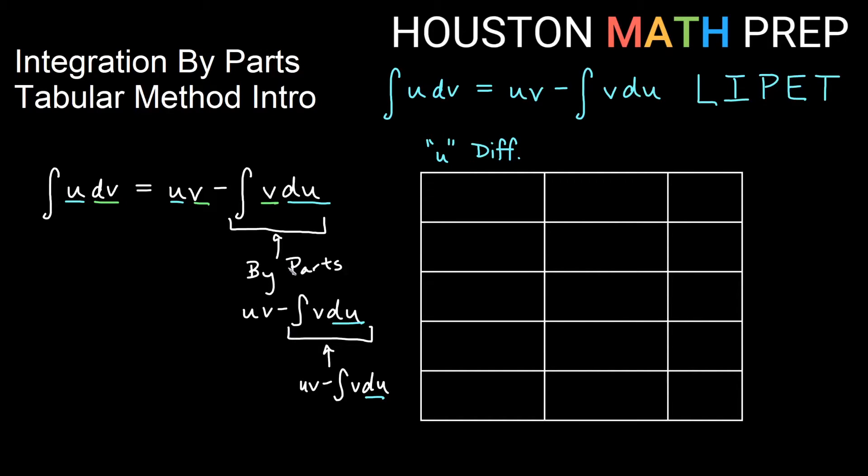And then if I were going to choose that same thing or a similar thing to be dv again when I integrate by parts, then I would take the antiderivative of it again, and then again, etc. So we will also have a column that is based on dv, and we will actually integrate that column repeatedly as we go down the list.